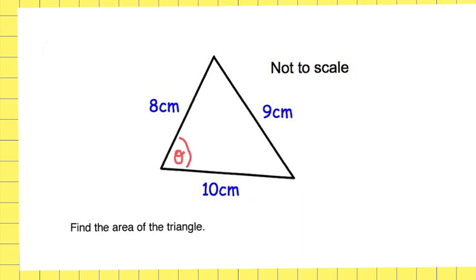Using the cosine rule, I can say that cos theta is equal to b squared plus c squared minus a squared, all over 2bc. So cos theta is equal to 10 squared plus 8 squared minus 9 squared, over 2 times 10 times 8.